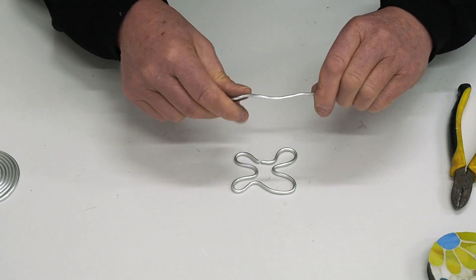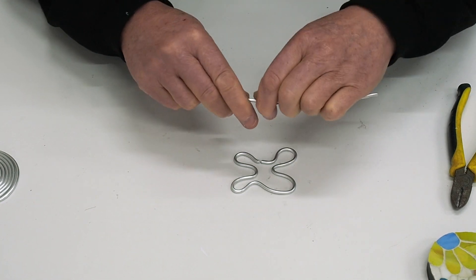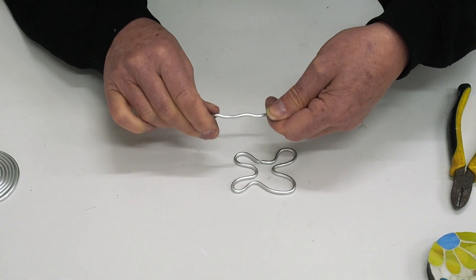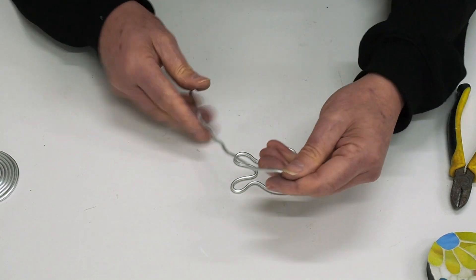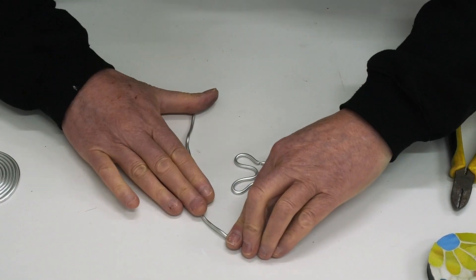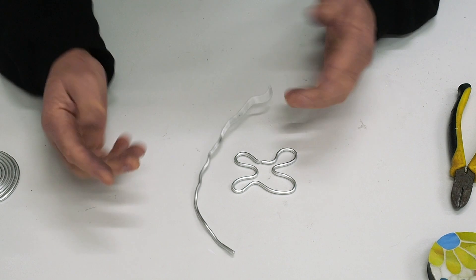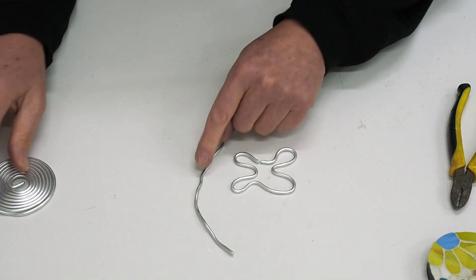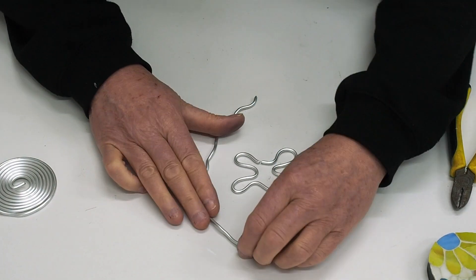All I did was I just slowly bent it to the curve that I'm actually after. Of course, when you do it, you'll be using a new piece—you won't be using one that's already been bent.